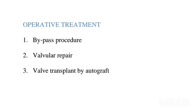Operative treatment: bypass procedure — simple bypass with vein or prosthetic material may be used in larger vessels, for example, vena cava and iliac veins. Valvular repair — when the venous valves in the deep veins are damaged, valvular repair is done. Valve transplant by autograft — a portion of the vein containing defective valves following deep vein thrombosis may be replaced by transplanting a segment of axillary vein or brachial vein containing competent valves. So this was all about deep vein thrombosis. Thanks for watching.